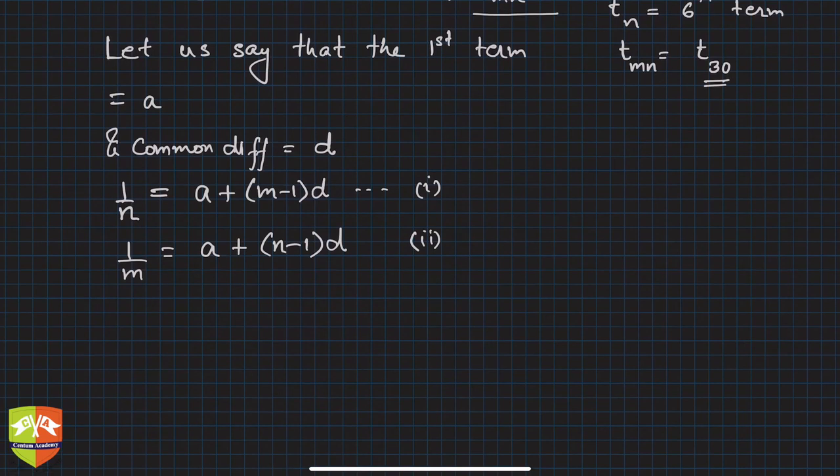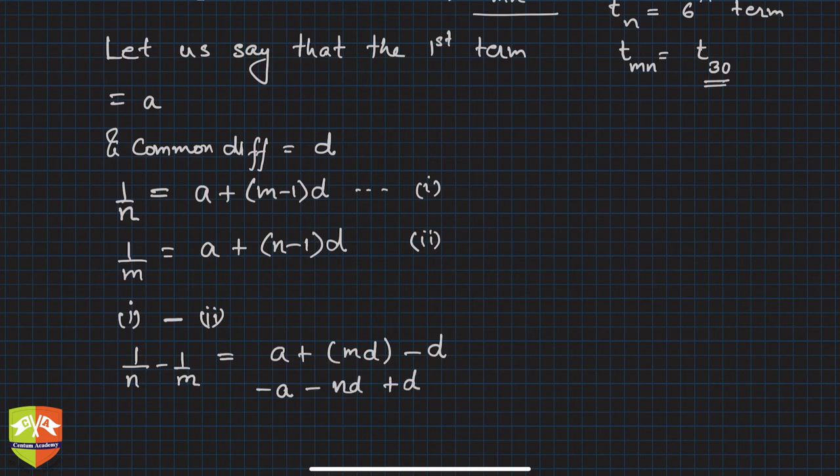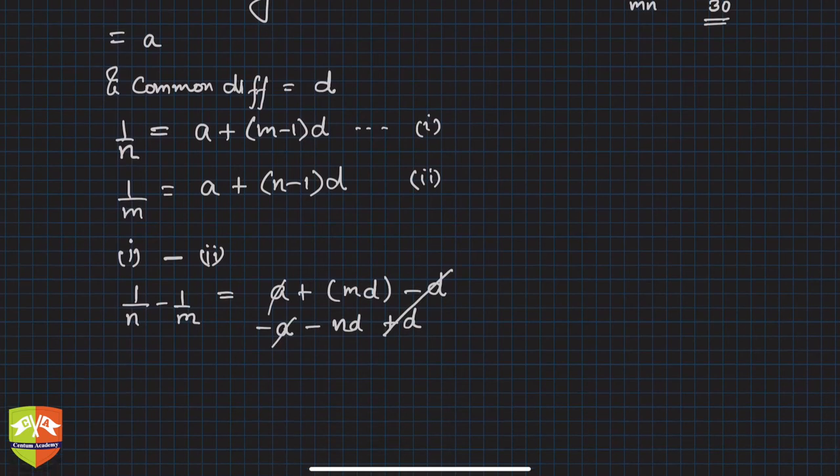So what we can do is do this operation (1) minus (2). What will you get? You'll get 1/n minus 1/m in the LHS, and here a + md - d was the first one, and then subtract the second one: minus a, then minus nd and plus d. So this d and this d goes, this a and this a goes. So what do we see? We can simplify this as well.